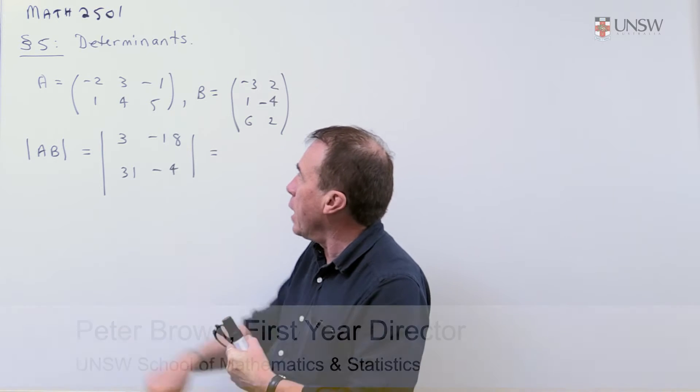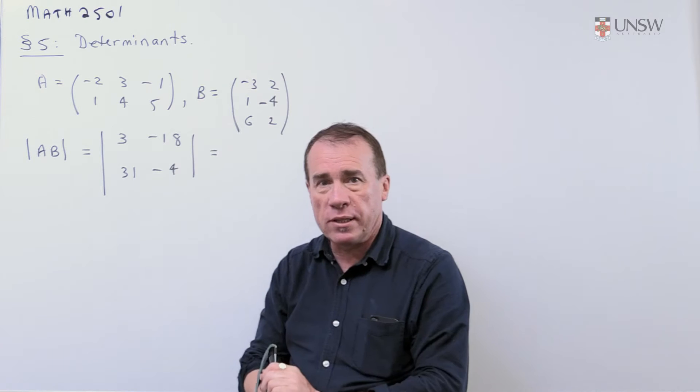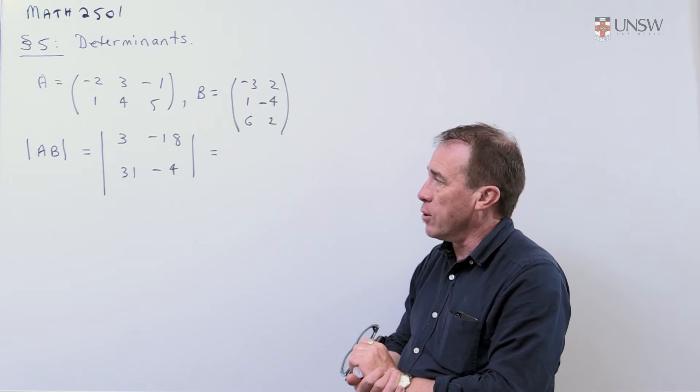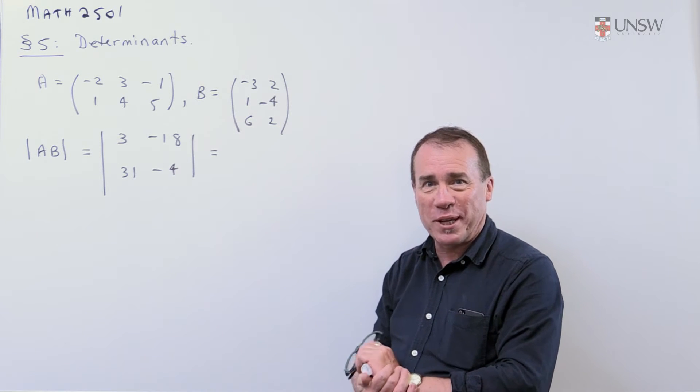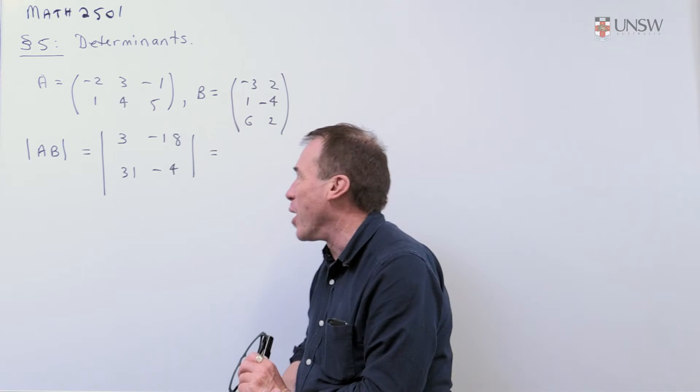This is Math 2501. I'm just going to finish this section on determinants with this example here. So they give you two matrices, A and B, and they ask you a fairly innocuous question. Firstly, you want the determinant of A times B.